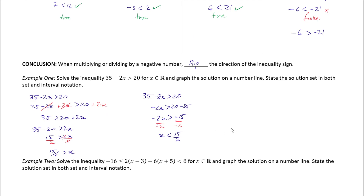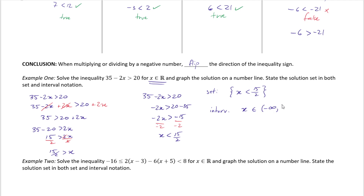Now I'll state the solution set in set notation and interval notation. Since the question states x is an element of real numbers, in set notation the answer is simply x < 15/2. For interval notation, since x is less than 15/2, x is an element of the set from negative infinity to 15/2, using a round bracket at 15/2 because 15/2 is not included.